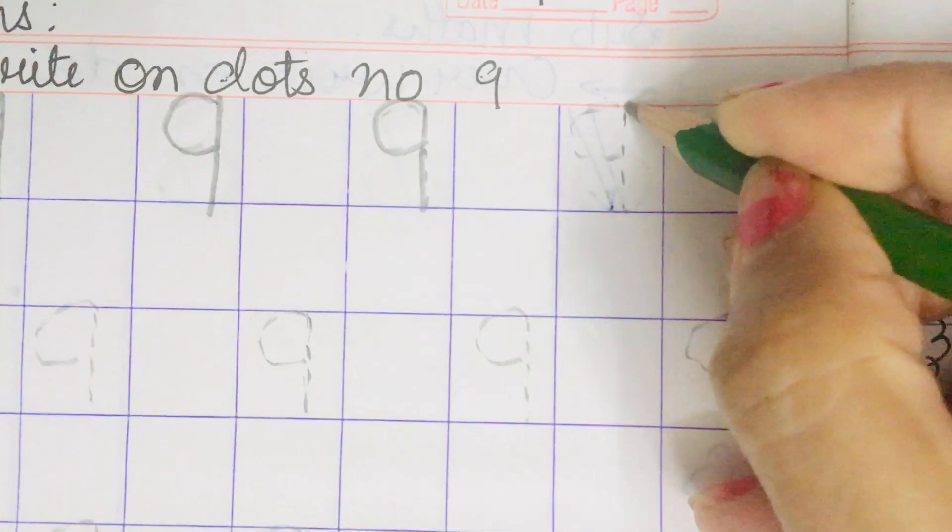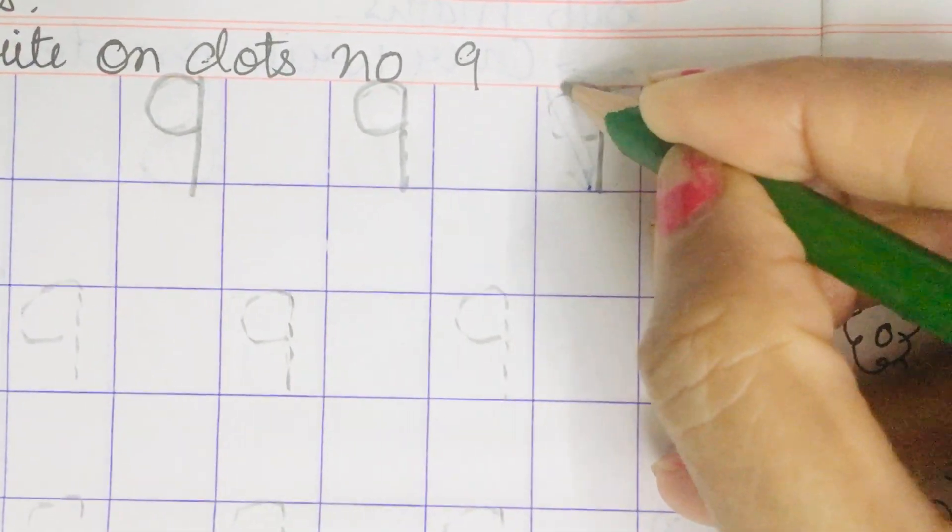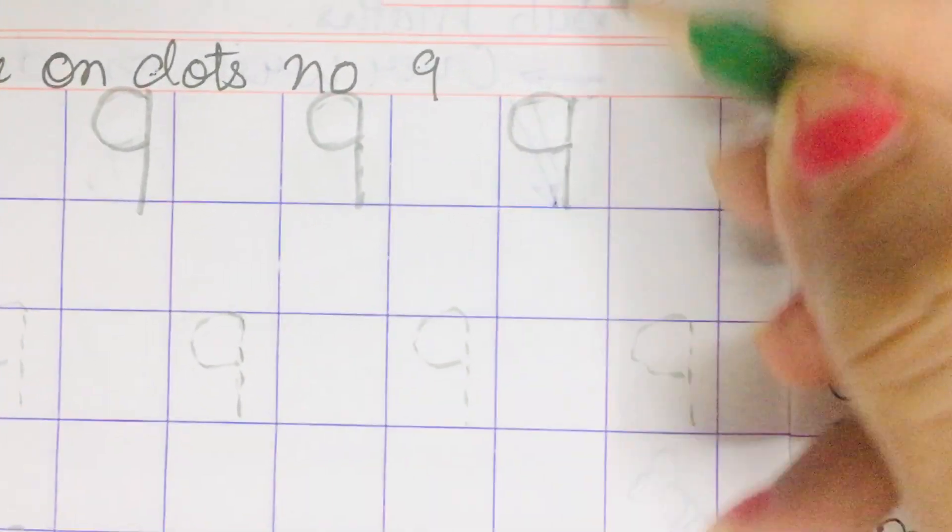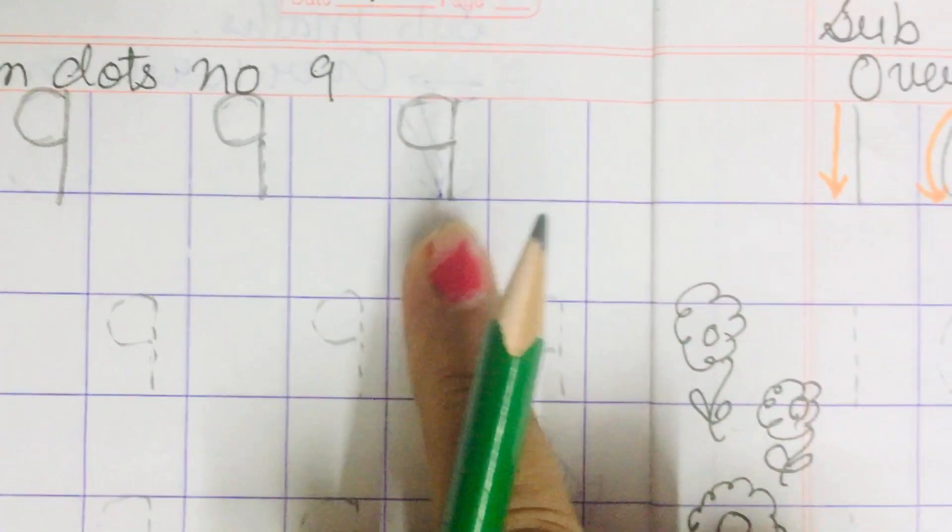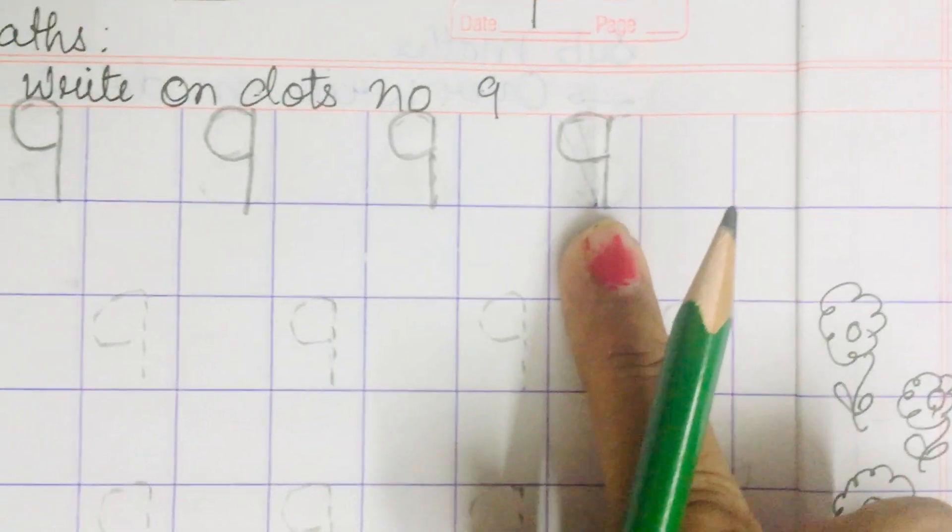Again we will make a standing line and C like this by joining the dots. Everybody speak with me. This is number 9. Learn to say number 9.